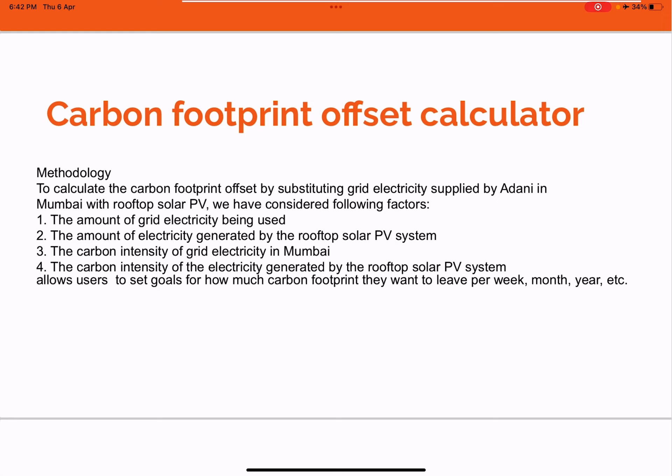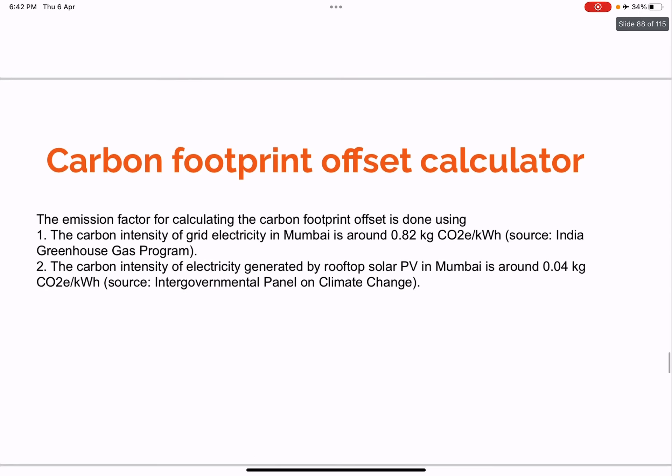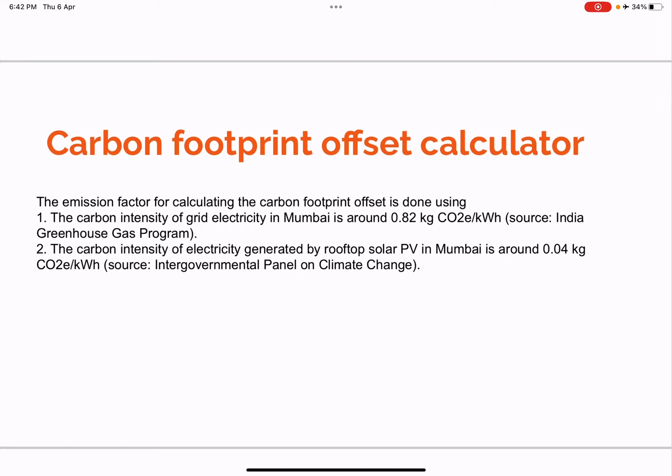With this data, one can set goals for how much carbon footprint would be offset per week, per month, or per year. For the Mumbai region, the carbon intensity is assumed to be 0.82 kg of CO2 equivalent per kWh for grid electricity, and 0.04 kg of CO2 equivalent per kWh for the solar system. For other regions, the grid carbon intensity value would differ accordingly.